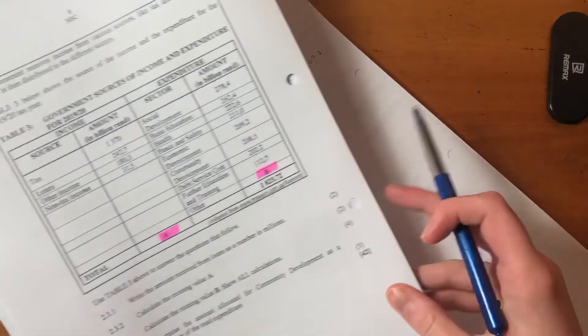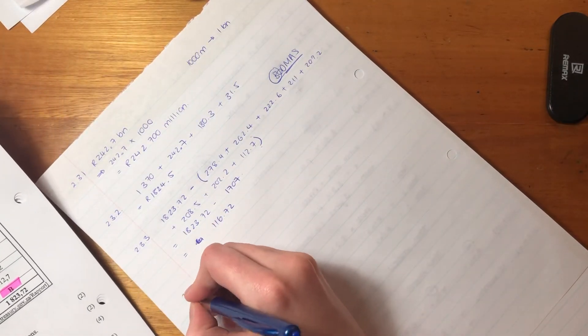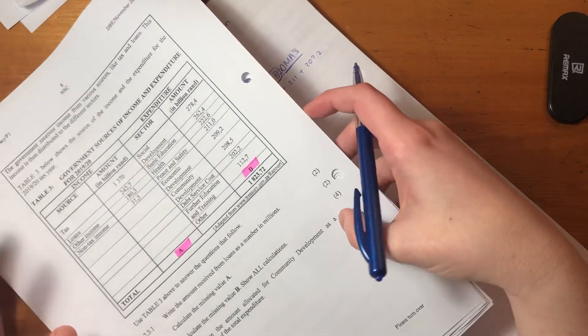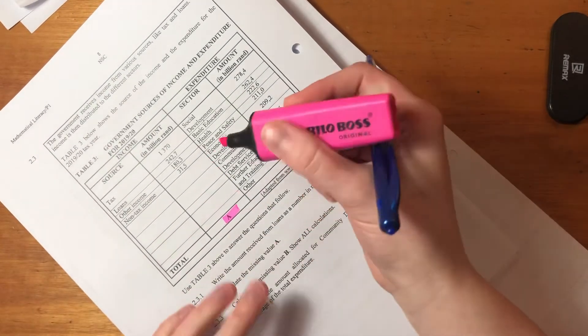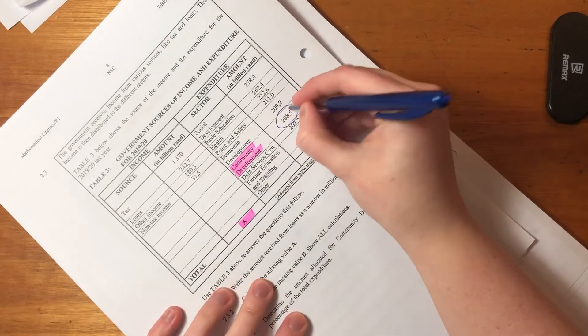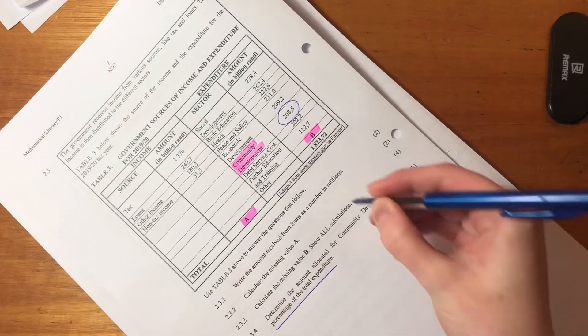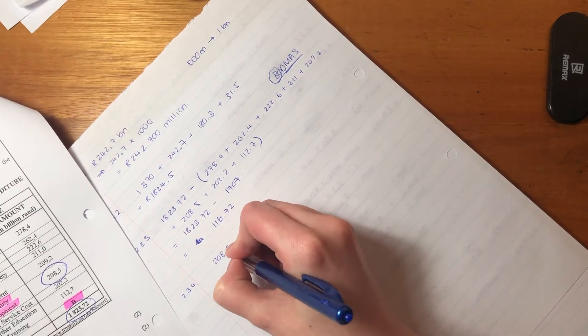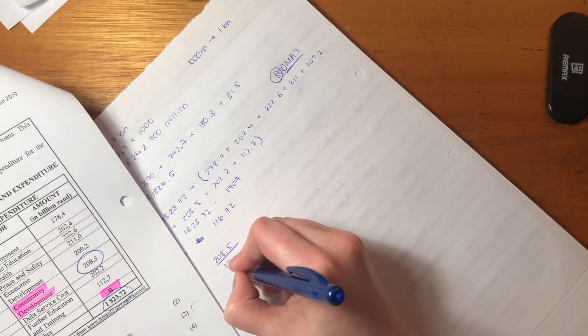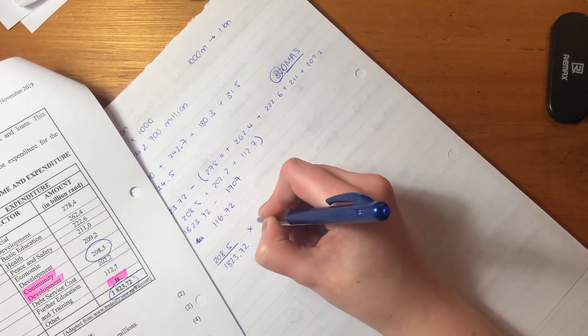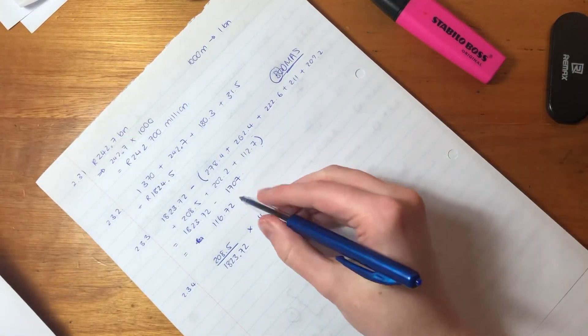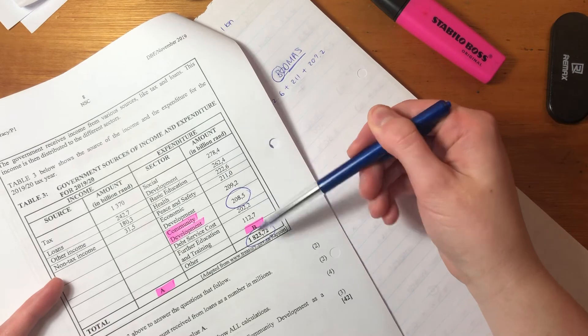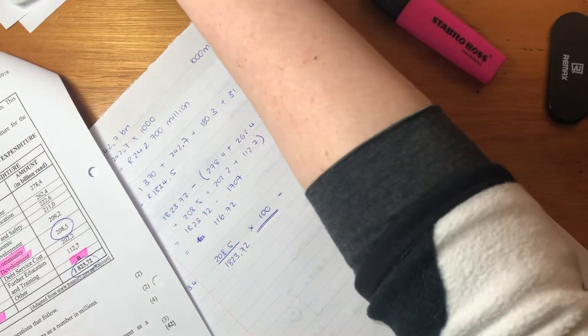Let's do the last question for this question, and then we would have been done with an extra 42 marks. It says determine the amount allocated for community development as a percentage of the total expenditure. Let's find community development. There's community development and the amount is 208.5. But what does it say? It says as a percentage of total expenditure. So we're also going to look at the total expenditure. So we're going to say 208.5, because that's my community development, over my total expenditure. And then if I want to make it a percentage, remember, we always have to times by 100. This is very important, because that's how we make it a percentage. So I'm saying the cost associated with community development divided by the total expenditure.